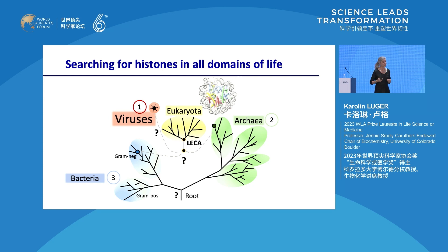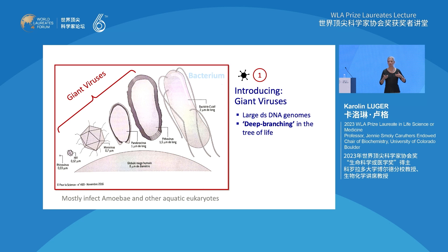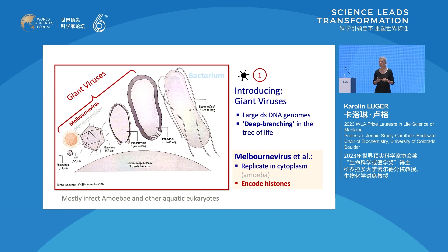I'll tell you three little stories today — what we found in viruses, in archaea, and in bacteria — and we're going down this rabbit hole from pretty normal to rather strange to completely weird. Let's start with viruses, in particular giant viruses. You might say the last thing we need is a giant virus. These things exclusively infect aquatic organisms, mostly amoeba, but they're very interesting and were only discovered recently because they're very large and didn't pass the filtration test that viruses normally have to pass.